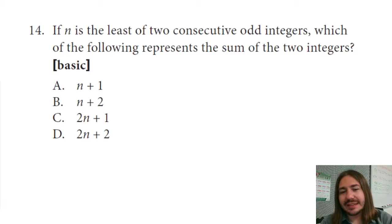Number 14 says if n is the least of two consecutive odd integers, which of the following represents the sum of the two integers?